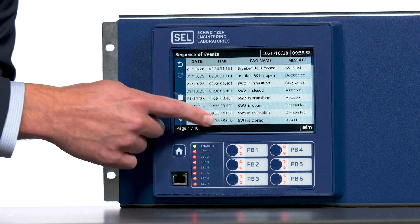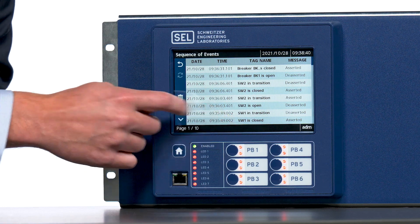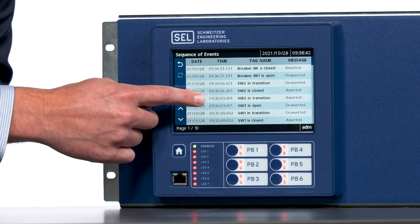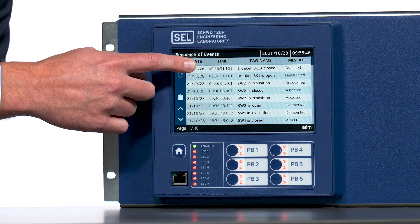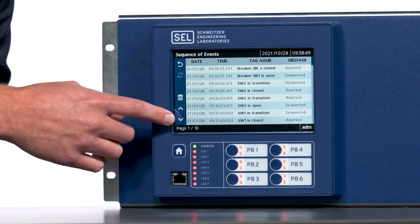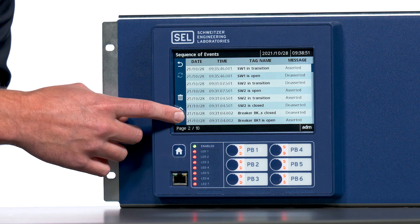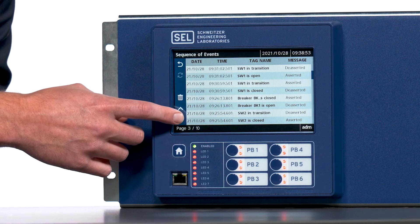The SOE screen has been configured to only contain logs that are relevant to the Axion Bay control. Here we can see our switch one transition to close, switch two transition from open to close, and our breaker one transition from open to close. You can navigate to previous logs using the up and down arrows on the SOE application.